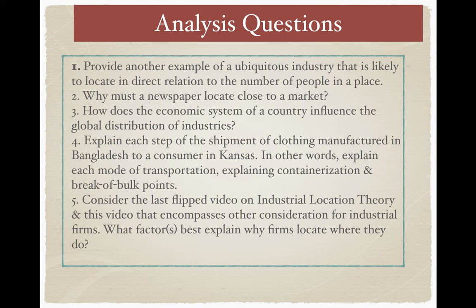Here are your analysis questions — there are five. The one I'm most concerned with, where most of my grading will be concentrated, is number five. Consider the last video on industrial location theory, Hotelling's theory, Ullman's spatial interaction, Ullman's triad of spatial interaction, and this video discussing other factors that go into considerations for industrial firms and why firms are located where they are. I want you to explain which of those factors best explains the location of industrial firms and why.